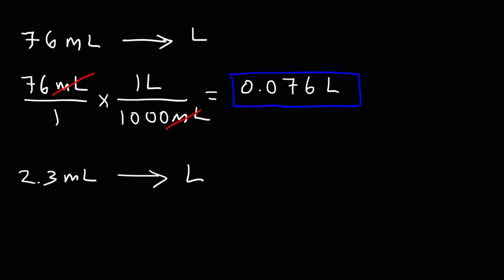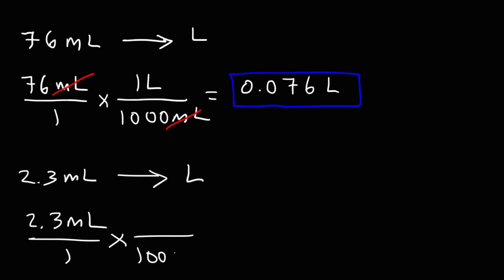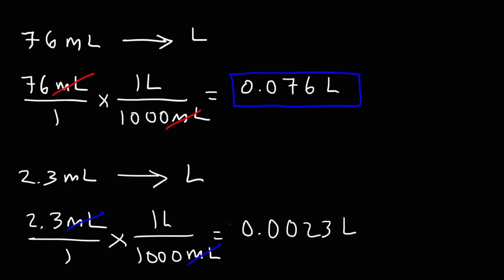Now let's move on to the next one, following the same process. Start with 2.3 milliliters over one, then place 1,000 milliliters on the bottom of the conversion fraction so the units cancel. So it's 2.3 divided by 1,000 — you can move the decimal three places to the left — giving you 0.0023 liters. Now you know how to convert from milliliters to liters.